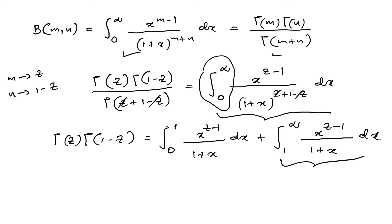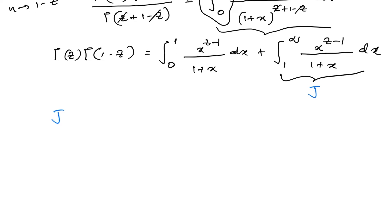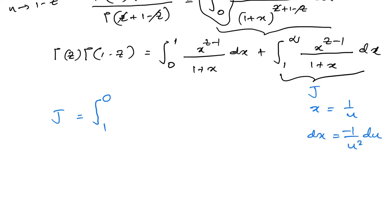Let us call the second integral J. To evaluate J, I make the substitution x = 1/u, so dx = -1/u² du. We change the limits: when x = 1, u = 1; when x → ∞, u → 0. Then x^(c-1) becomes (1/u)^(c-1).